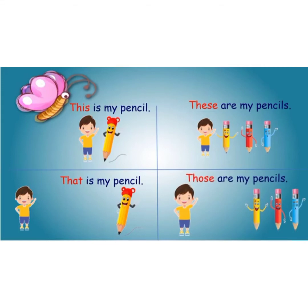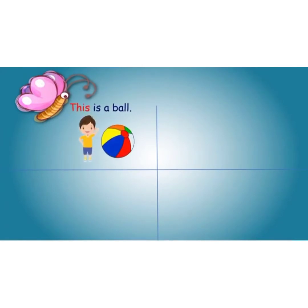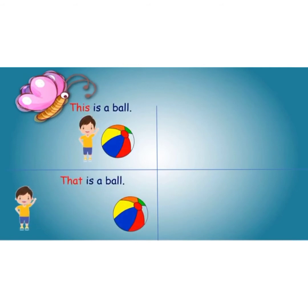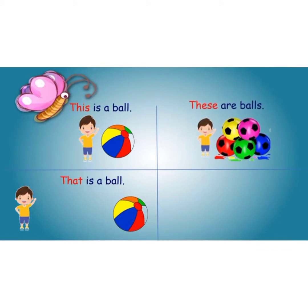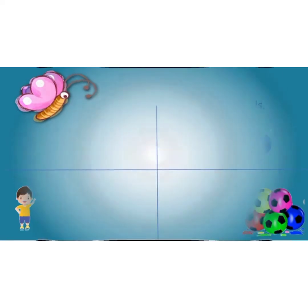Fourth example. 'This is a car' — singular, near. 'That is a car' — singular, far. 'These are balls' — plural, near. 'Those are balls' — plural, far. So students, have you understood something? We come to the last part of the examples.